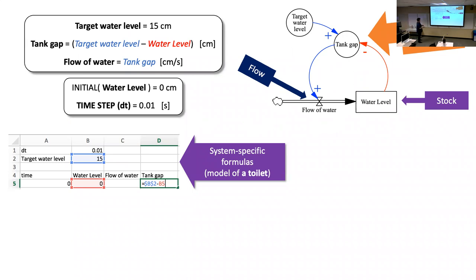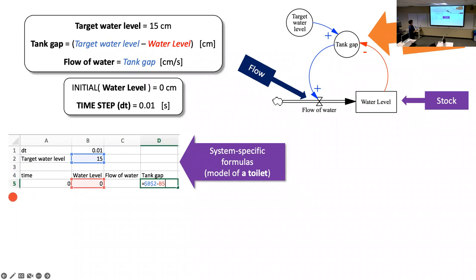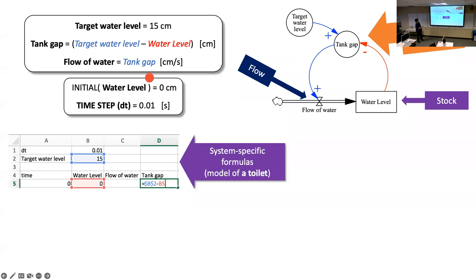It's very similar to the bacterial flow case. We start with a dt up here. Instead of lifetimes and average times between births, our main static converter — our exogenous variable — is target water level, placed at the top. Then we set up our initial row at time zero, putting in the initial condition for water level and starting to calculate formulas. Before putting in the flow of water formula, we put in the tank gap formula: target water level minus water level.